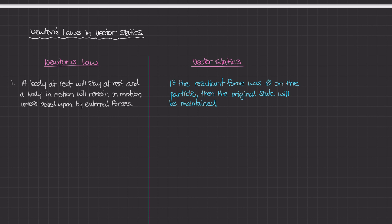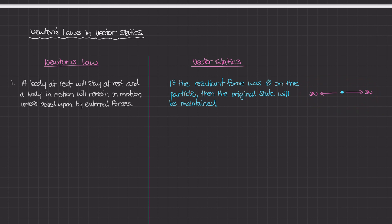The object will continue moving at that constant velocity unless acted upon by external forces. Let's say I had a particle and applied two forces to it: one was three Newtons to the right and the second force was three Newtons to the left. Intuitively, three Newtons to the right and three Newtons to the left means the resultant of those two external forces is going to be zero. So if that object was originally at rest and not moving, and you applied both of these forces at the same time, the resultant is zero and the object will continue staying at rest.